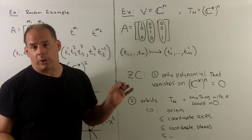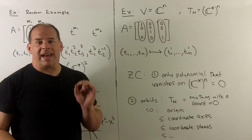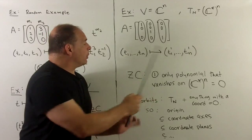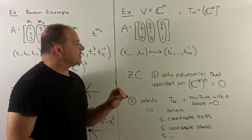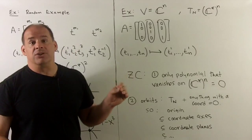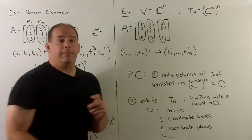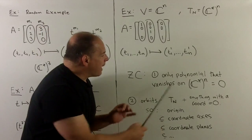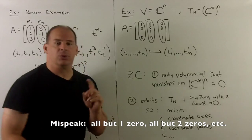Somewhat simpler but with a little more going on: let V equal C^n. Our torus is just C*^n and the A matrix is just the identity matrix. For our map, 1 goes on T₁, 1 on T₂, all the way down to 1 on T_n — giving the identity map between C*^n's. The only polynomial that can vanish on all of C*^n is the zero polynomial, and that corresponds to C^n, which is our Zariski closure. All we're doing is putting back in the zeros — tuples where none of the entries are zero — so the orbits are the origin, coordinate axes, coordinate planes, and so on.